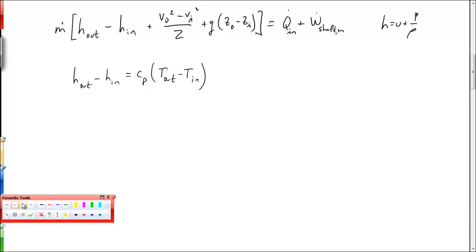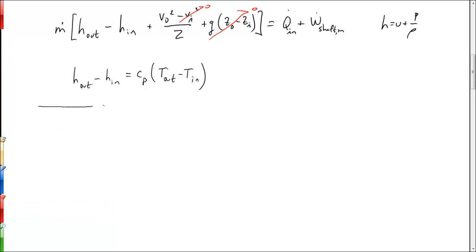Now, using our assumptions that we've made, we're going to ignore changes in elevation, we're going to ignore the kinetic energy of the flow coming in, because we're told that the velocity is close enough to zero. And so we can now rewrite our equation as M dot C sub P times T out minus T in plus V out squared over 2 is equal to Q dot in plus the shaft work being done.